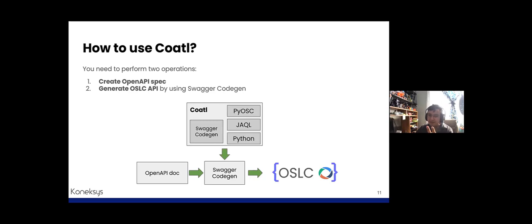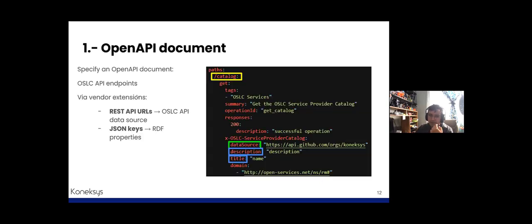In order to use this new tool, the user only needs to perform two operations: create the OpenAPI document and generate the OSLC API through Swagger Codegen. During the OpenAPI document creation, it is necessary to specify which OSLC API endpoints will expose a certain OSLC resource. Coattle extensions are employed to specify which REST API URL will be used to fetch the REST data and which JSON keys of the REST API will be exposed as RDF properties of the generated OSLC resources.